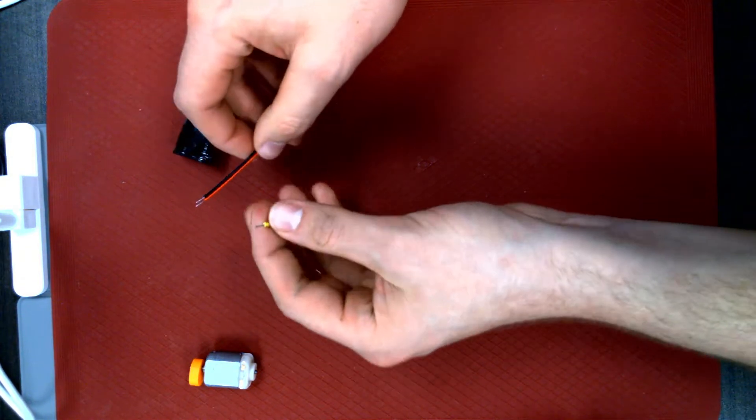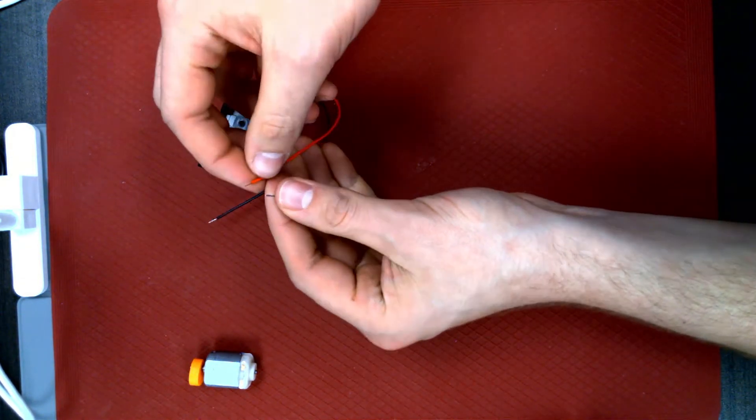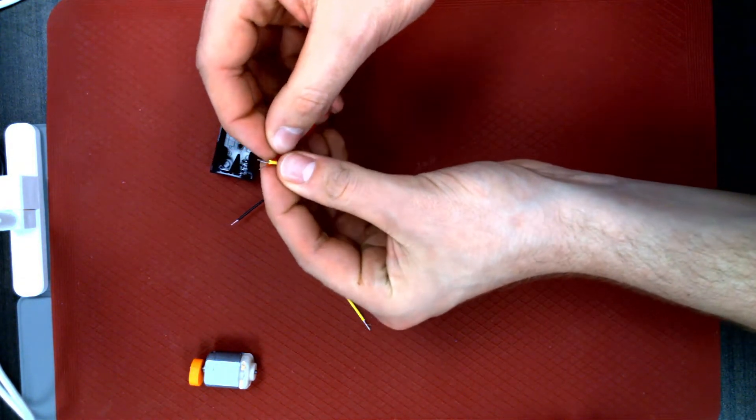Take one of these wires and the red battery holder wire and twist them together, then solder the joint.